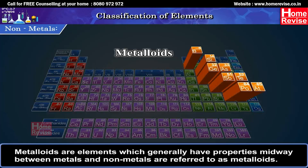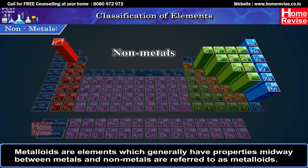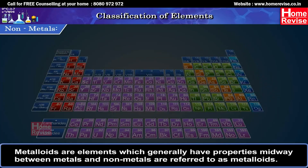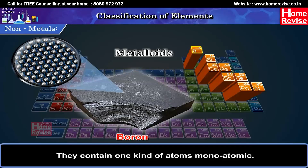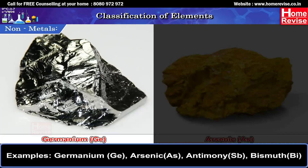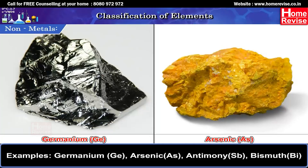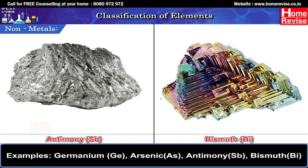Metalloids are elements which generally have properties midway between metals and non-metals. They contain one kind of atoms and are monoatomic. Examples: Germanium (Ge), Arsenic (As), Antimony (Sb), Bismuth (Bi).